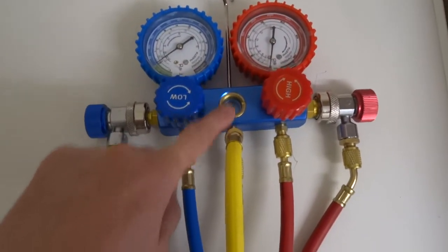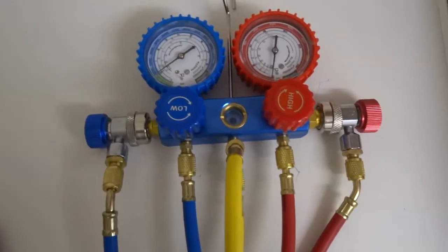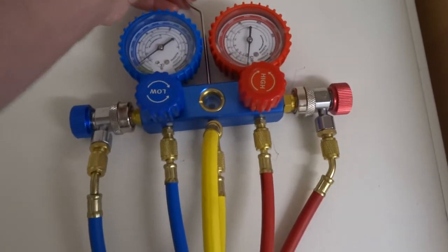The sight glass is important so you can see the refrigerant going past. Obviously a hook so you can hook it on.